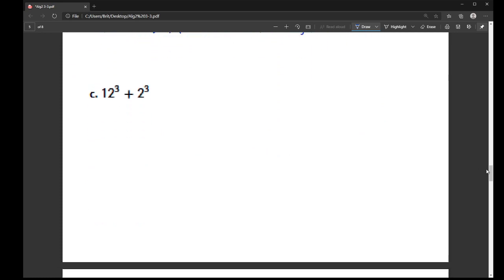All right, now on C here, again, this is a weird one with numbers. We wouldn't normally do this. But we do have an addition of two cubic numbers. So we're going to use the second formula that was on that list, which is the sum of cubes. So where A is, I'm going to plug in 12. And where B is, I'm going to plug in 2.